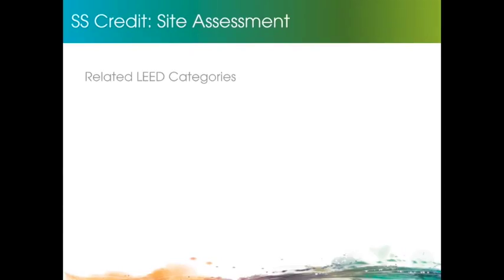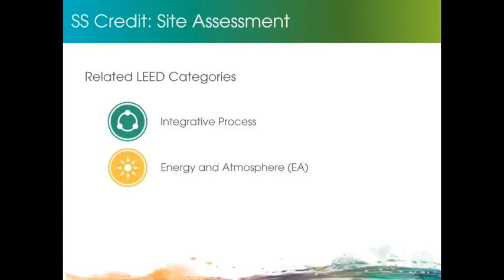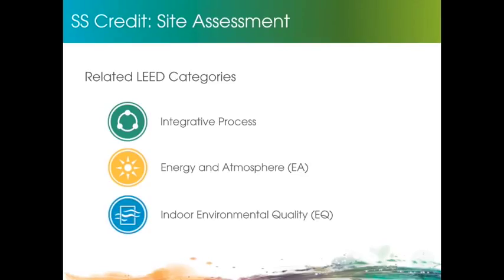When a site assessment is properly conducted, it can help with the following categories. Integrative process, energy and atmosphere, or EA, to help determine possible passive and active energy efficiency strategies, as well as placements for renewable energy systems, and indoor environmental quality, or EQ, for placement of windows and orientation of the building.